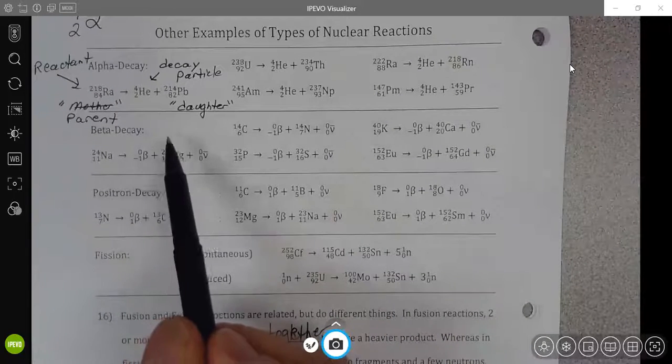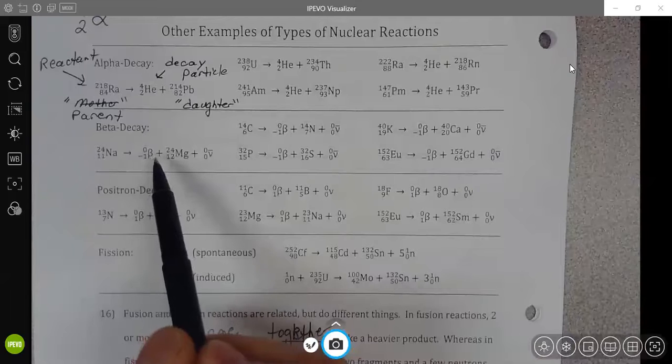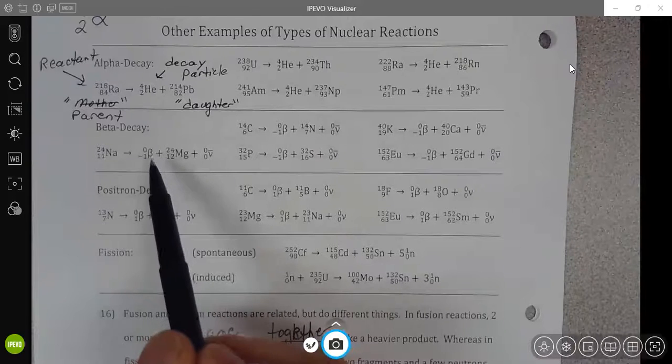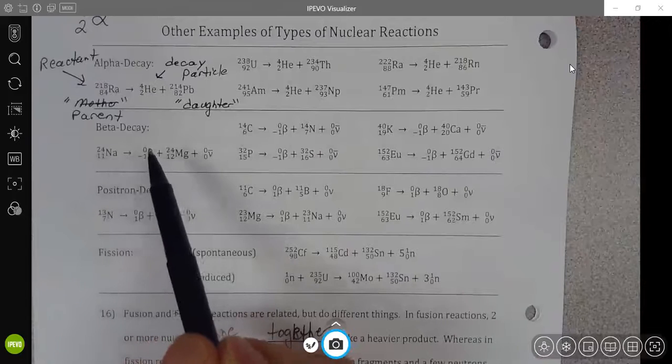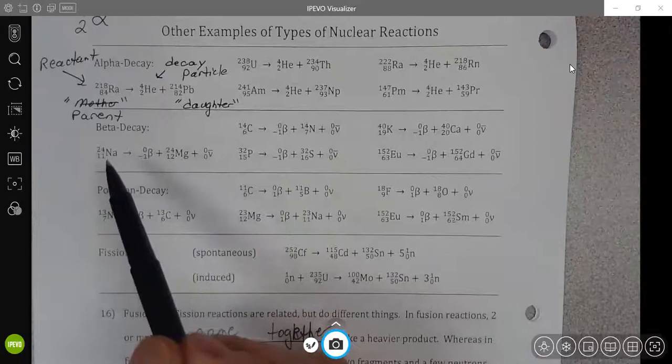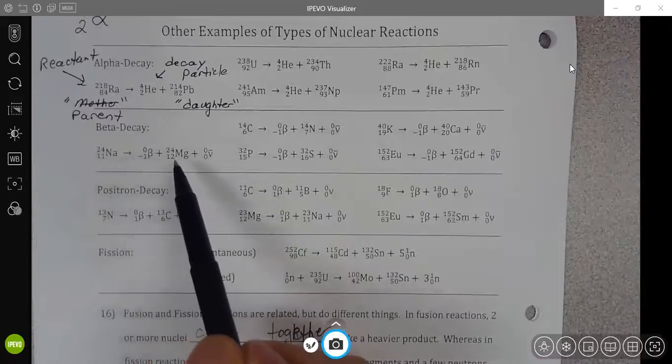In beta decay, the beta particle is really an electron. But we're going to symbolize it with this Greek letter beta. Notice that in beta decay, there is no change with the mass number, but the atomic number actually goes up by one.